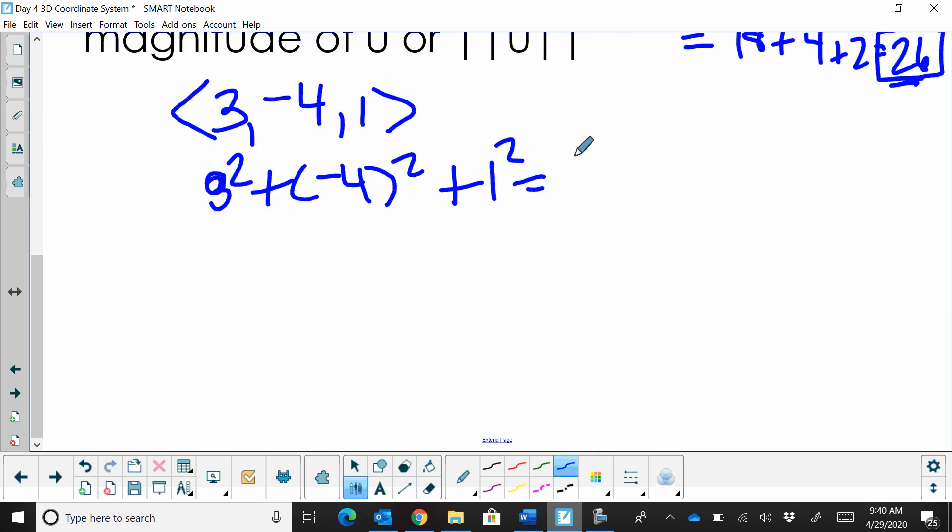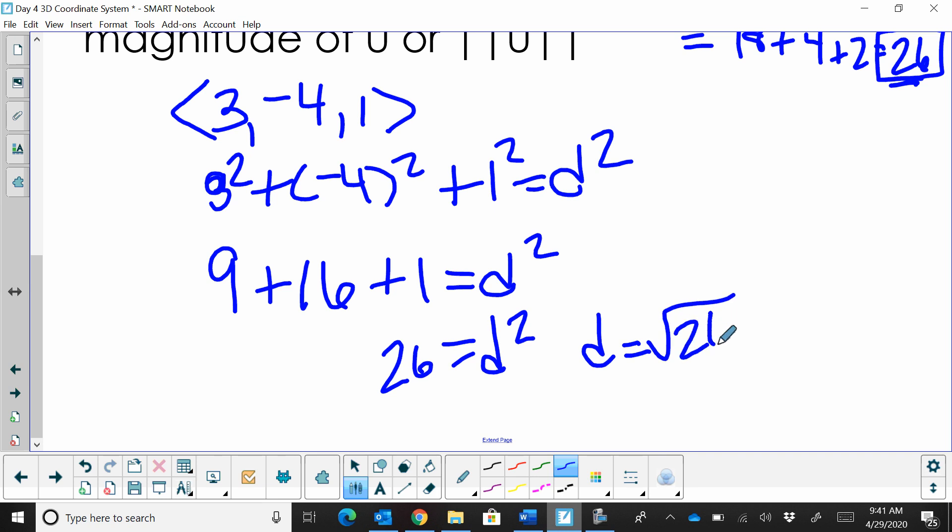And that's going to give us the distance squared. So that's going to be 9 plus 16 plus 1 is equal to our distance squared, c squared or d squared in this case. And that's 26 is equal to d squared. So the distance or the magnitude is the square root of 26. And that is the magnitude. And the symbol for magnitude is the double lines on your vector. And that is how you find the vector in 3 dimensions.